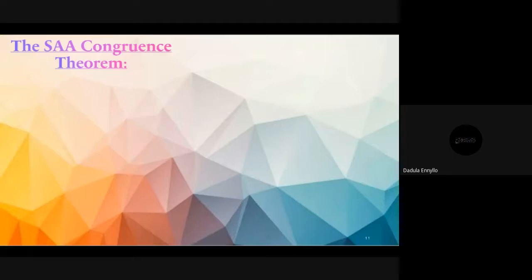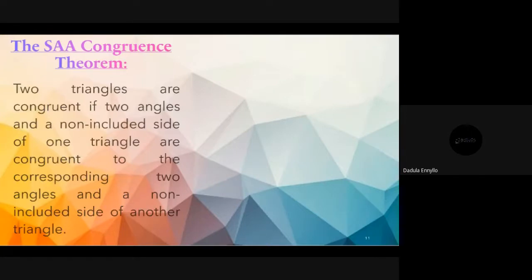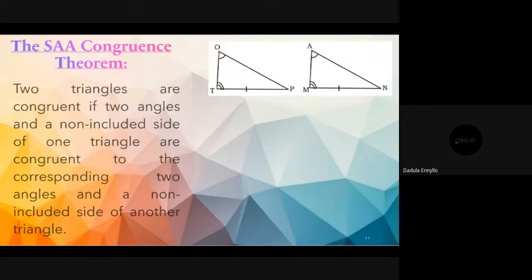The last one is the SAA congruence theorem — note it is a theorem, not a postulate. Two triangles are congruent if two angles and a non-included side of one triangle are congruent to the corresponding two angles and a non-included side of another triangle. Given triangle TOP and triangle MAN.